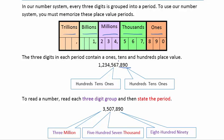When we go to the next period, which is the thousands period, we still have the same thing: ones, tens, hundreds. Next place value period, the millions: ones, tens, hundreds. So on and so forth — inside of every period, it always has that pattern: ones, tens, hundreds. So to read a number, all we have to do is read each three-digit group in the period and then state the period.